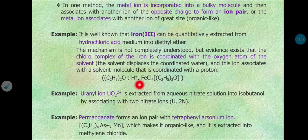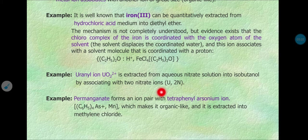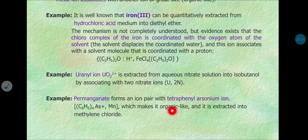So iron is neutralized by this ion association. A second example: uranyl ion is extracted from aqueous nitrate solution into isobutanol by simple ion association with two nitrate ions, forming UO₂(NO₃)₂. A third example: permanganate forms an ion pair or ion association with tetraphenylarsonium ion, [(C₆H₅)₄As⁺][MnO₄⁻], forming a neutral ion association complex that distributes and is extracted into DCM, dichloromethane or methylene chloride.